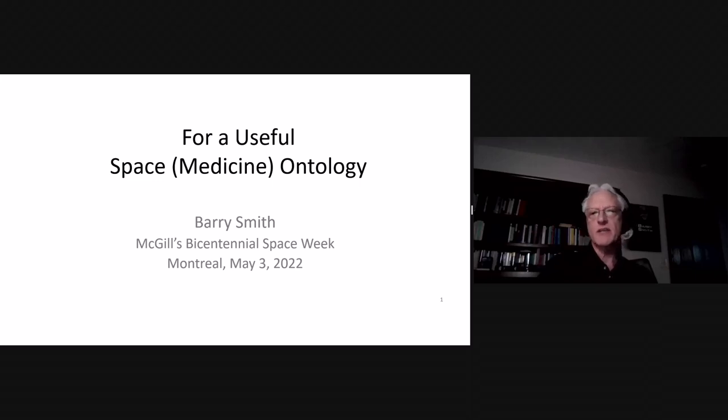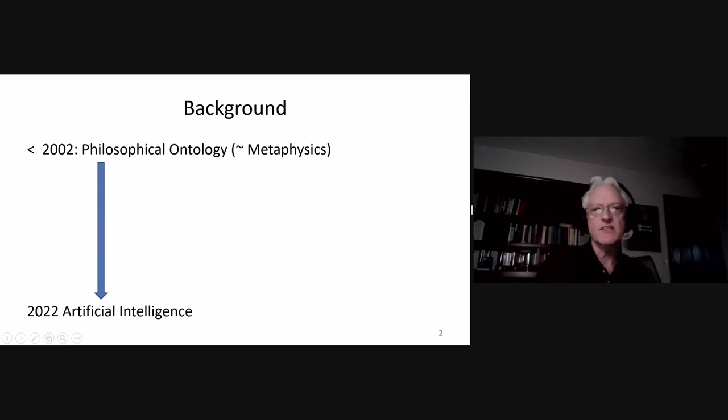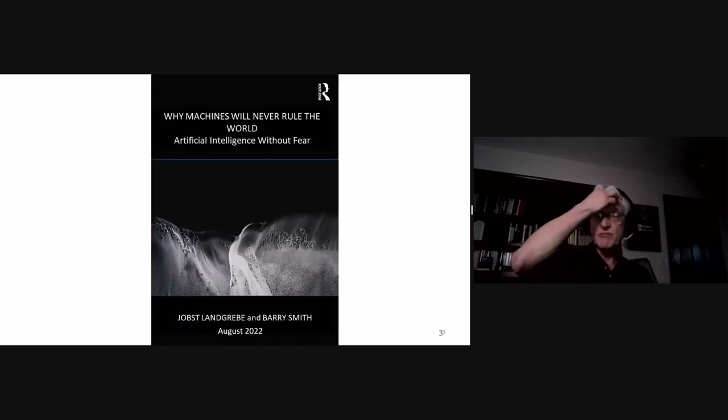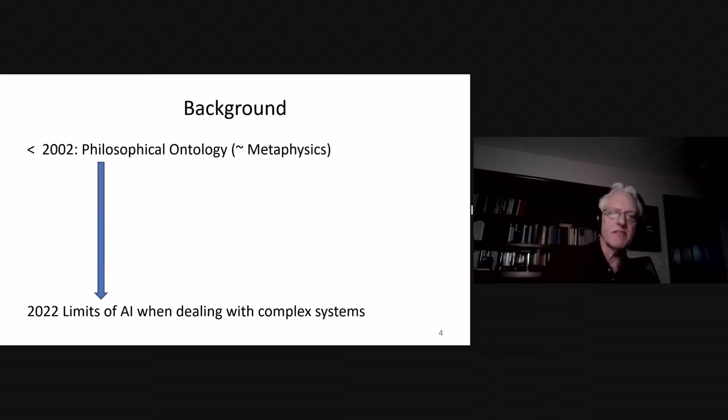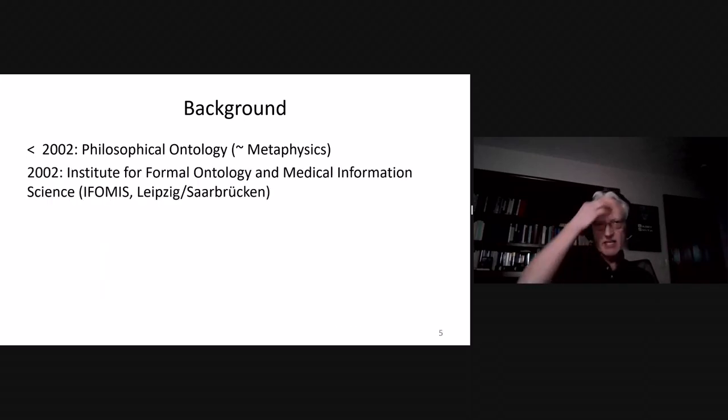I'll start with some background. I started life as a philosopher working on metaphysics. Recently, I started a whole new line of thinking. I'm about to publish a book with a German AI entrepreneur colleague on artificial intelligence, which more or less agrees with everything that Gary Marcus says in his book, but takes it further. We try and document in great detail the limits of AI when dealing specifically with complex systems, such as organisms and missions to Mars.